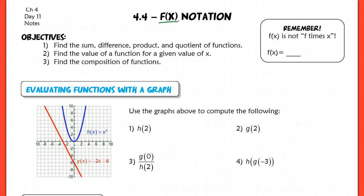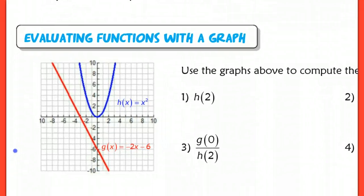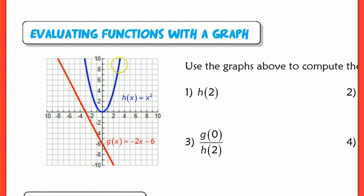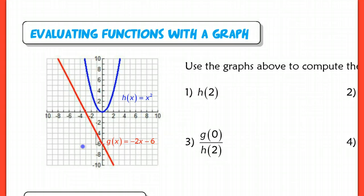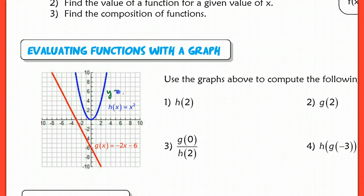Different letters represent different y variables. When you have multiple things graphed on the same line, rather than calling each one y and having to write out the entire function every single time, you can just refer to this function as h and this function as g, so the reader knows which graph you're looking at. We use function notation to make it easier so we don't have a bunch of different y variables all over the place.